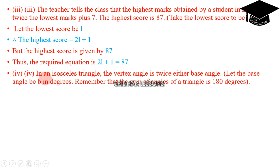Question number 4. In an isosceles triangle, the vertex angle is twice either base angle. Let the base angle be B degrees. Remember that the sum of angles of a triangle is 180 degrees. And this is an isosceles triangle. Let each base angle be B degrees, as was indicated.